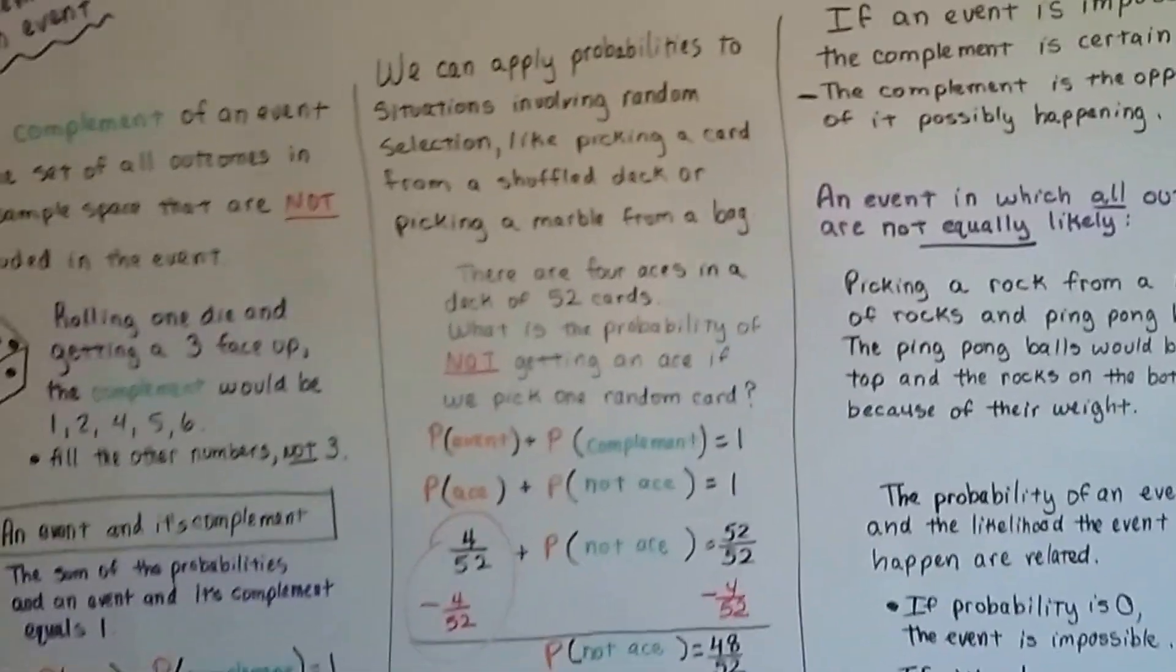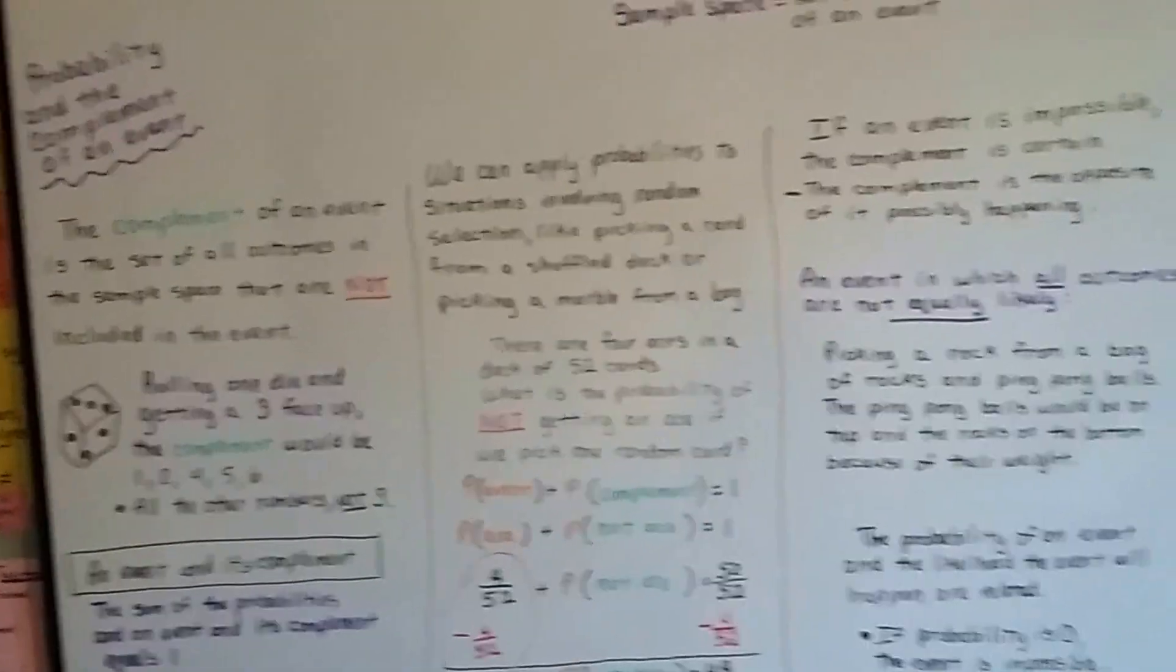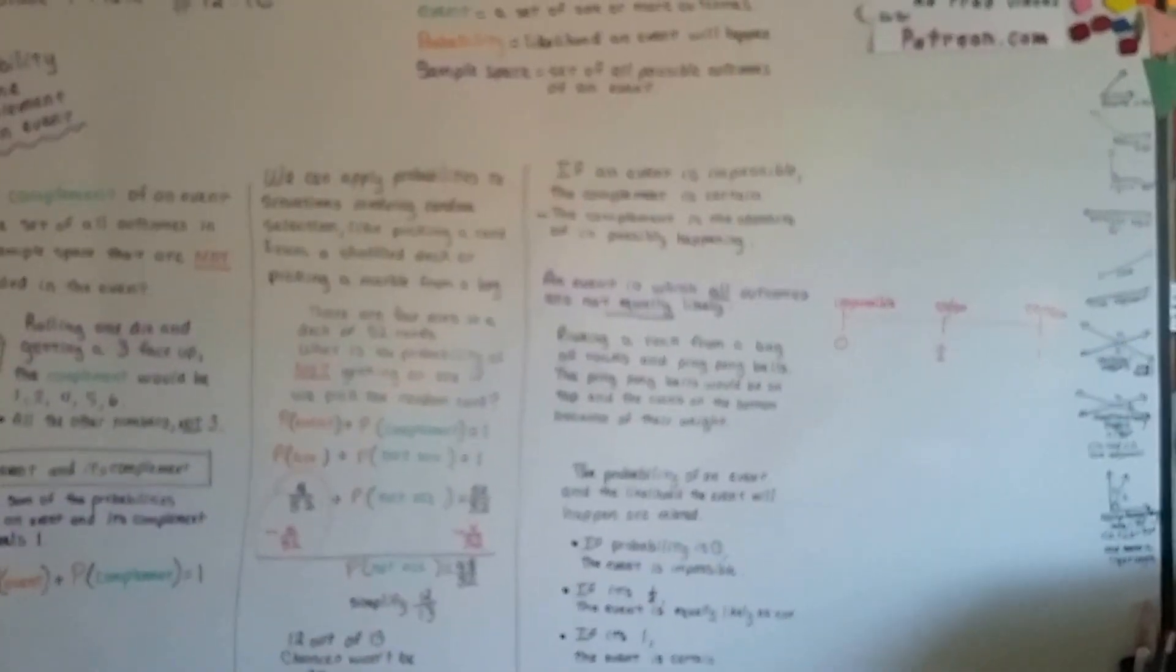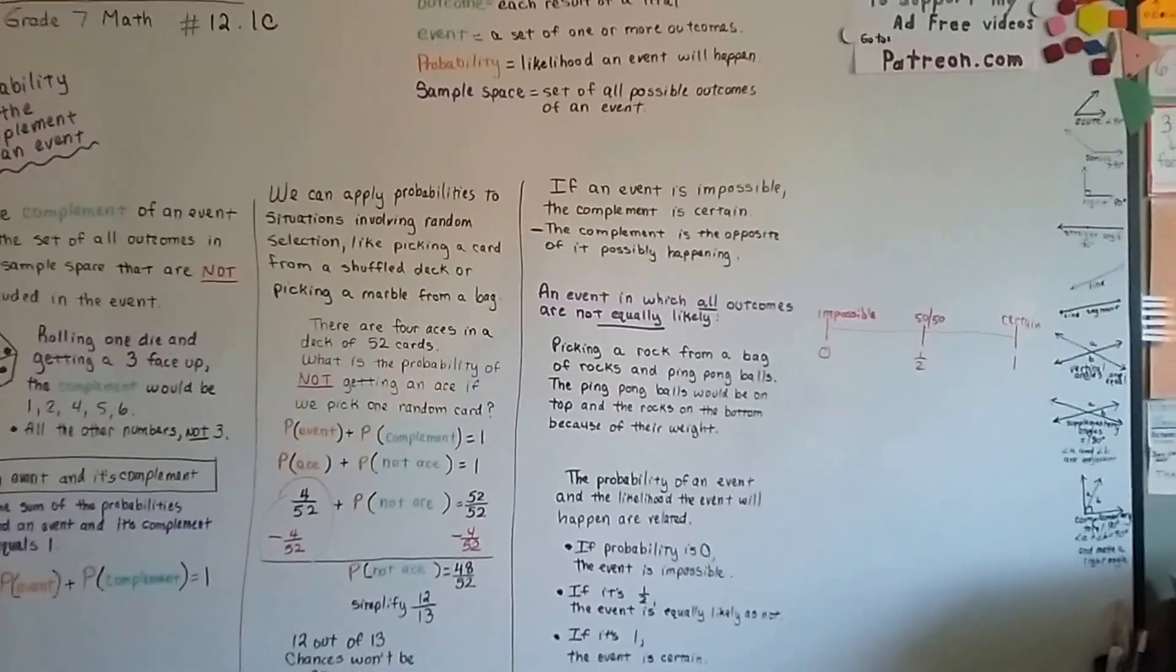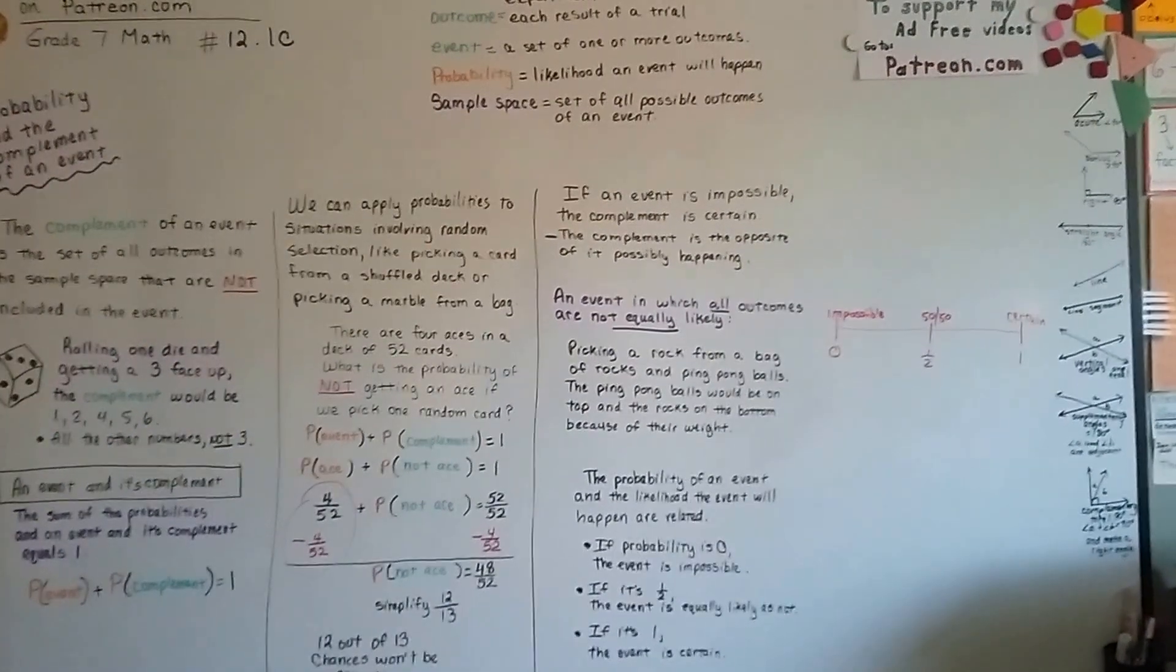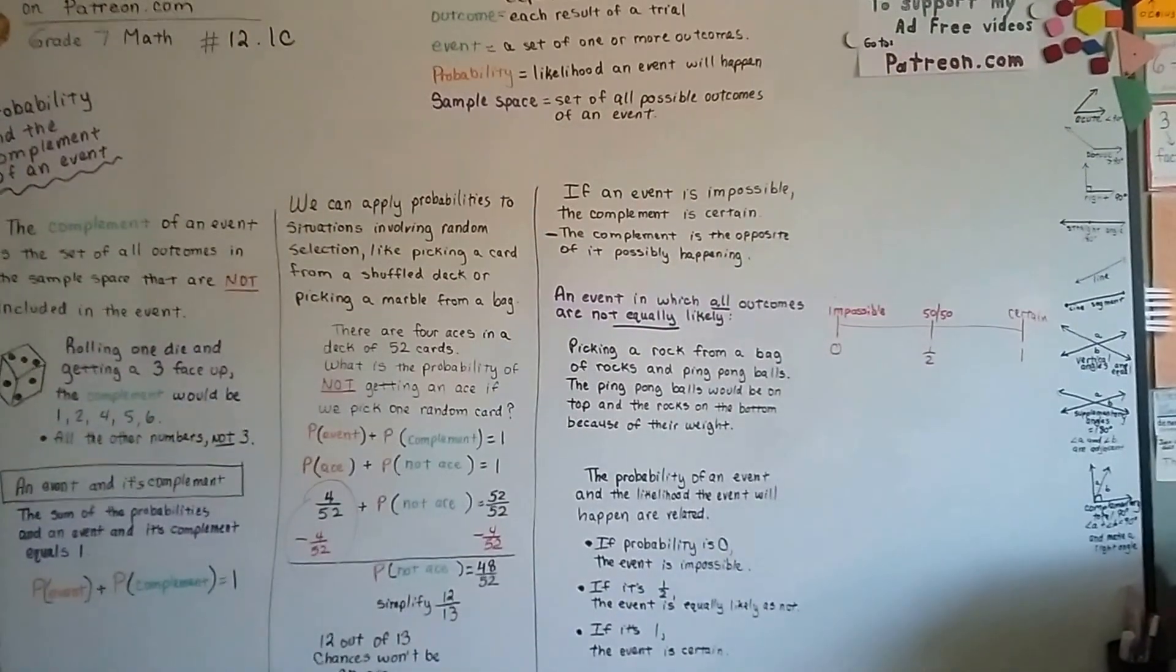That's probability and the complement of an event. We're going to talk about experimental probability next, in lesson 12.2. I hope this was helpful and you can understand now. I'll see you next video. Pardon my dog barking at the squirrels again. Bye!